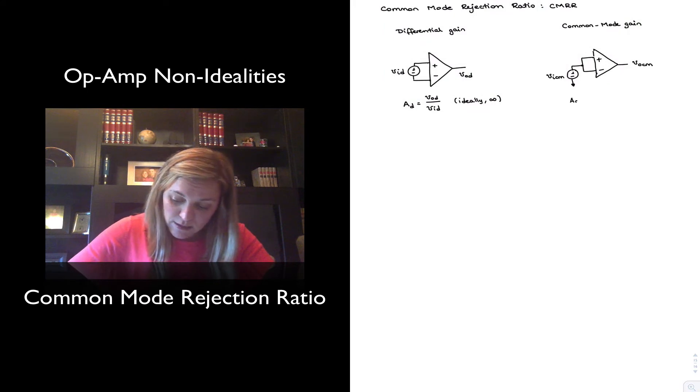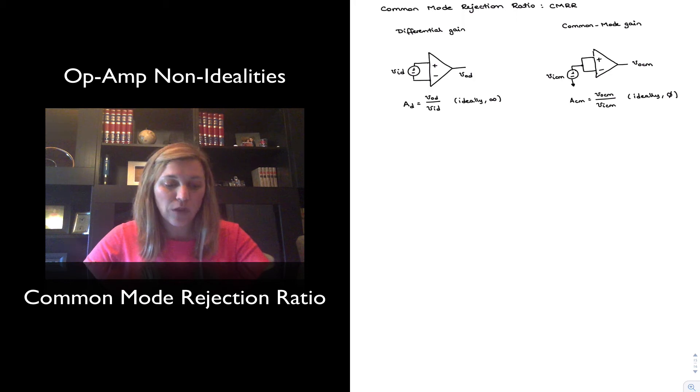The Common Mode gain is then defined as the ratio of the V-out-C-M, the output voltage in this case, divided by the Common Mode input signal. And again, ideally, we will expect or we will want the Common Mode gain to be zero.